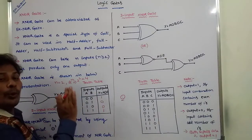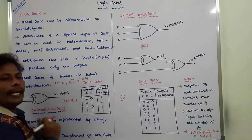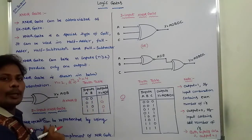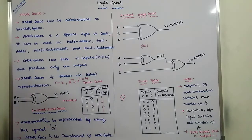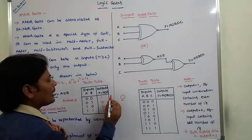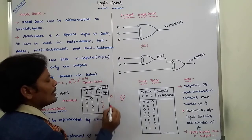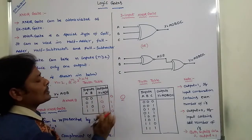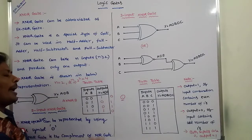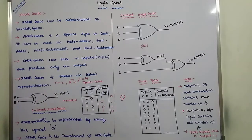Observing the two-input exclusive NOR gate and the two-input exclusive OR gate, both are opposite to each other. In the exclusive OR gate, the outputs are 0, 0, 1, 1 — which are opposite to the XNOR outputs. Hence, we can say that the exclusive NOR gate is the complement of the exclusive OR gate.